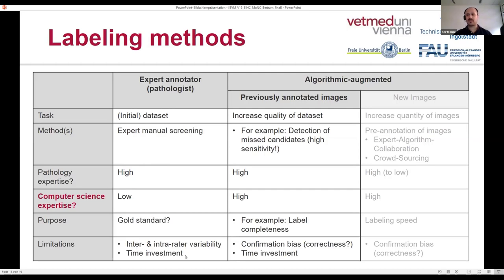Traditionally all labels are based on the pathologist, but we have developed methods where the pathologist can be supported by algorithms. For these approaches, which we call algorithmically augmented, computer science expertise becomes very important. Algorithmically augmented methods can be used for increasing the quality of datasets, but also for increasing the quantity — though the latter will not be discussed in this talk as we did not use it for the present dataset.